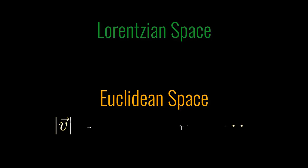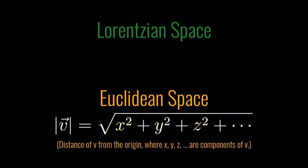So you remember in ordinary Euclidean space we define the distance by taking the sum of squares of coordinates and taking the square root of that. So that gives you the distance of a point from the origin.